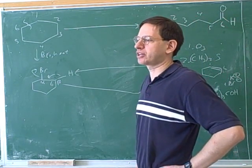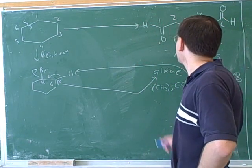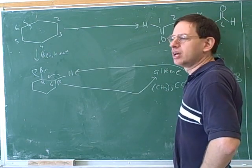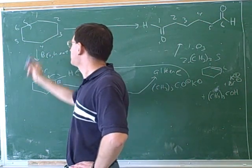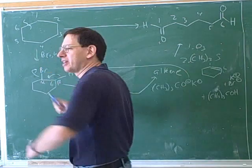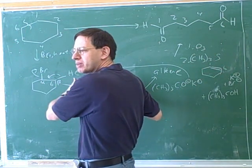So in this case, we could kind of move in both directions. First of all, we could say, it looks like this came from an ozonolysis. But you could also look at this and say, I know I'm starting with a radical halogenation. And then you can try to keep moving until you meet in the middle.